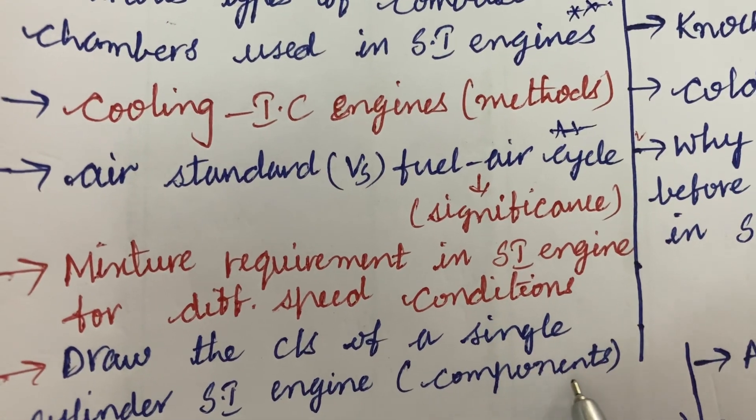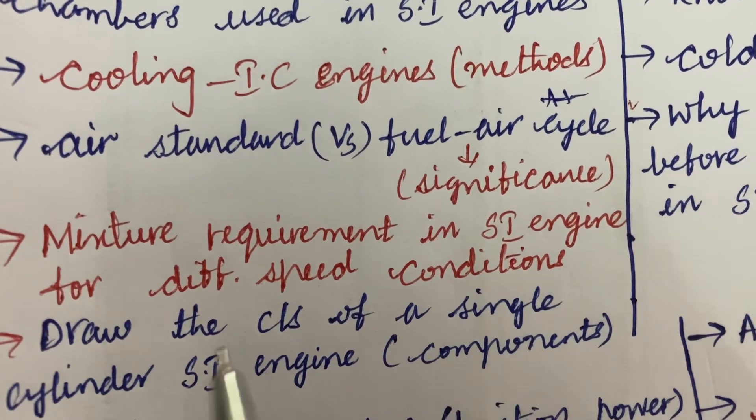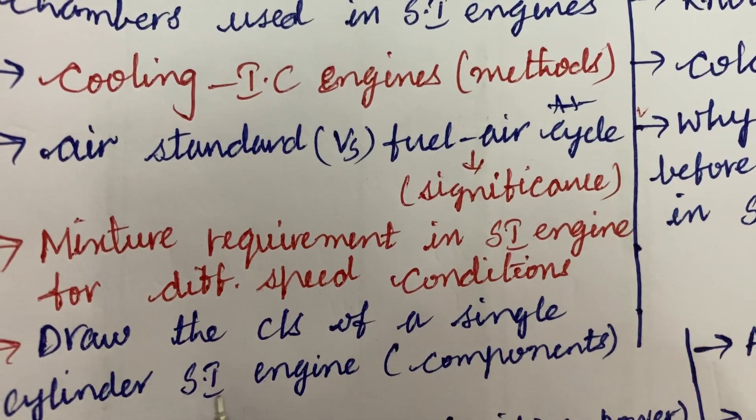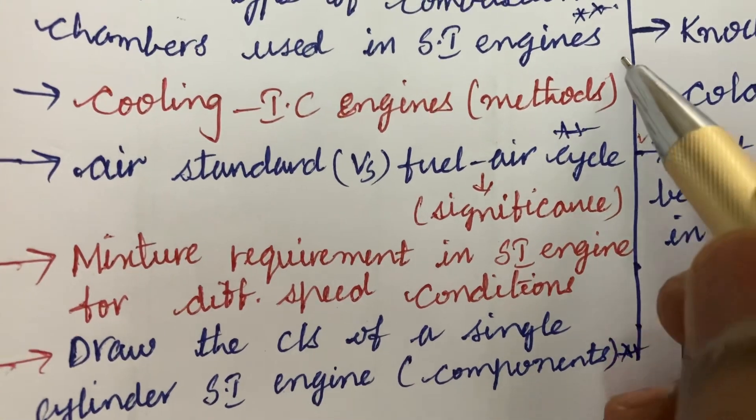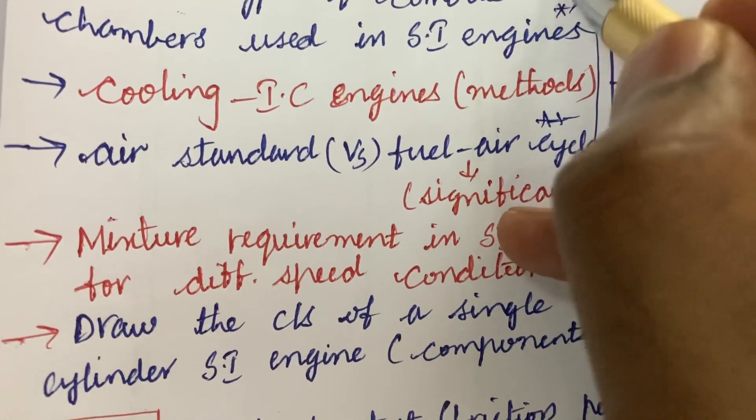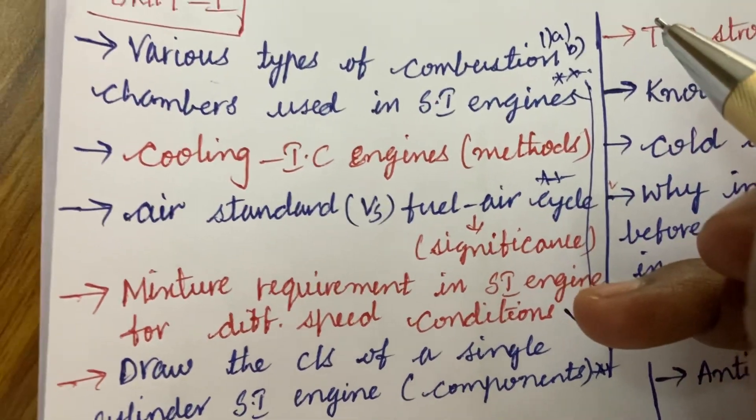Mixture requirement in SI engine for different speed conditions and draw the cross section of a single cylinder SI engine along and explain the components. From this part, we can expect 1A as well as 1B, dear students.